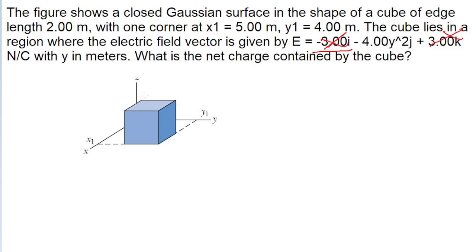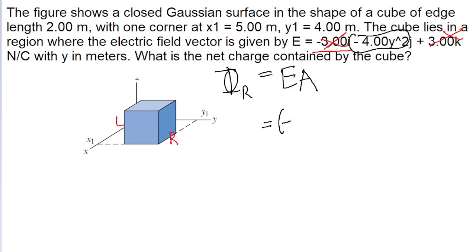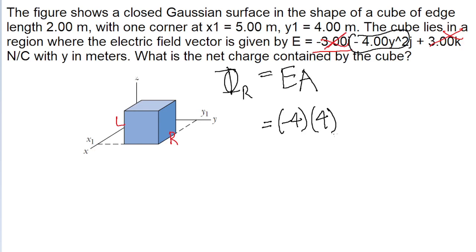So if we're only worried about the field that points in the y direction, then we're only worried about the field that passes through the left and right faces. Let's first write a formula for the electric flux that passes through the right face. Flux is equal to the magnitude of the electric field multiplied by the area of the surface it's passing through. According to the formula we're given, the electric field E is equal to negative 4y squared — that's negative 4 times the square of y, the y position of this face, which is y1. The problem gives us y1 as 4 meters, squared.